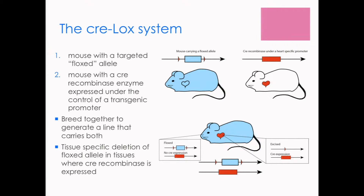These two mice are bred together to generate a line that carries both, and then you have tissue-specific deletion or other remodeling of the floxed allele in tissues where the CRE recombinase is expressed.